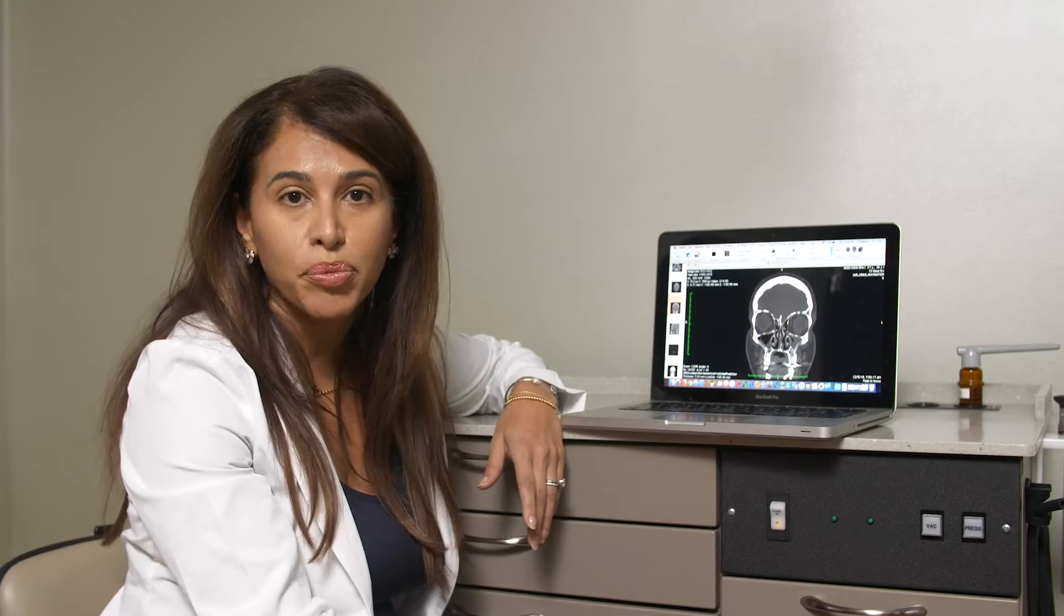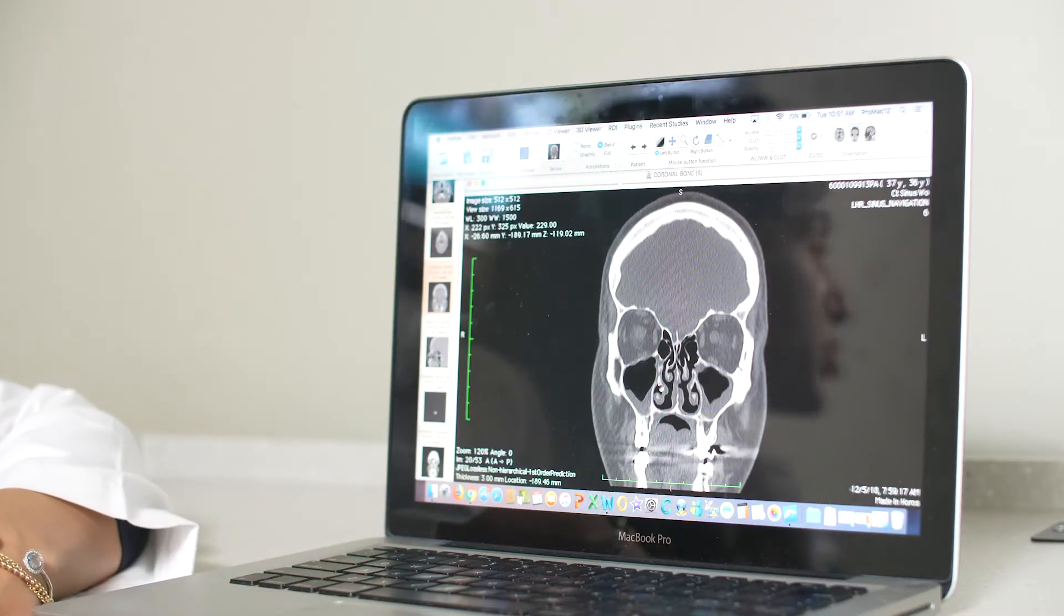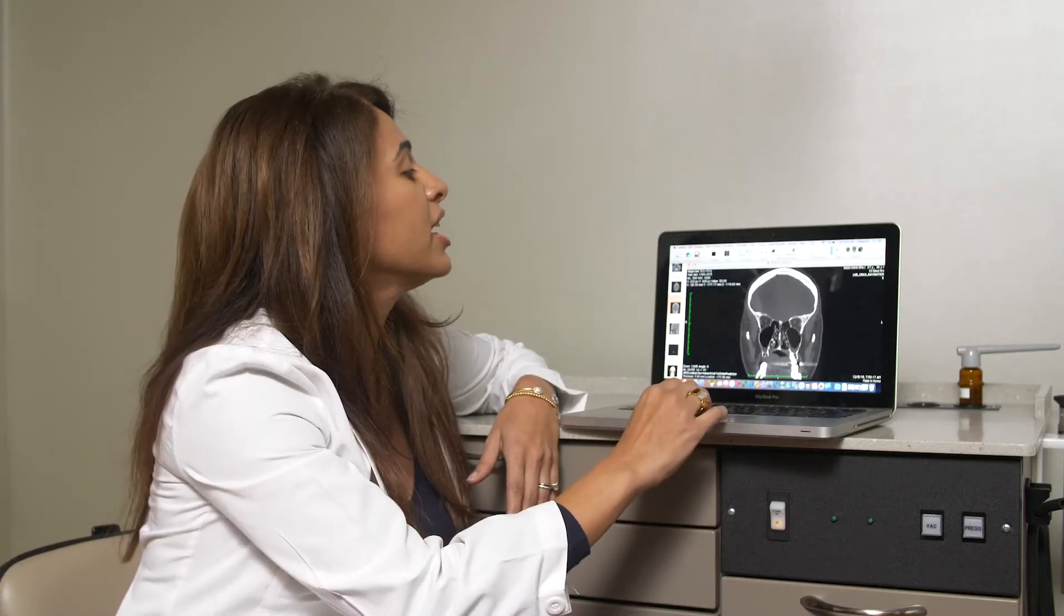When we're born, our sinuses are underdeveloped. Our heads are small. Little air cells start to develop as our heads grow, and that develops our sinuses. But when you look really close, everyone's sinuses are just a little bit different.